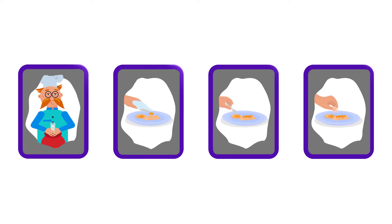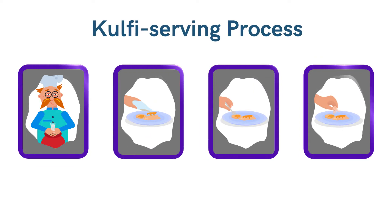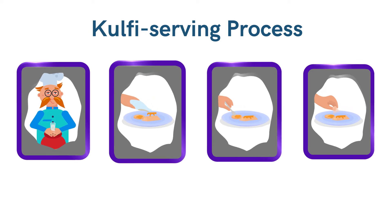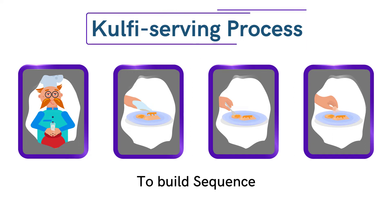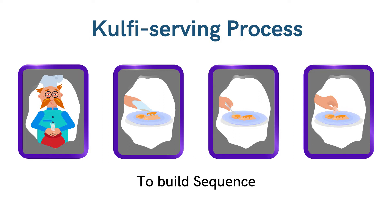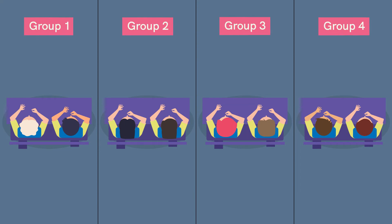For this we will need some material — a set of picture cards showing various stages of the kulfi serving process, something like this. We will use these cards to build the sequence. To make things interesting, tell the students that they are going to learn how to serve a kulfi or an ice cream. This will be fun.